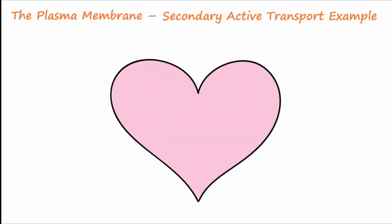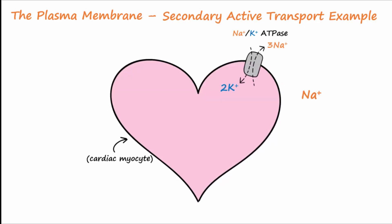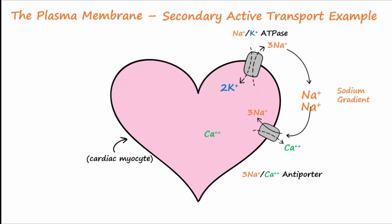Here's a nice example of secondary active transport. Embedded in the membrane of cardiac myocytes — the cells that contract to allow your heart to pump — are sodium-potassium pumps, which are examples of primary active transport. Also embedded in the membranes are sodium-calcium antiporters, which are examples of secondary active transport. The sodium gradient created by the sodium-potassium pump creates a driving force for sodium to come into the cell through the antiporter. This driving force of sodium provides the necessary energy to drive calcium from low to high and leave the cell.